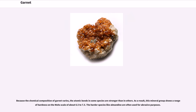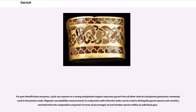Because the chemical composition of garnet varies, the atomic bonds in some species are stronger than in others. As a result, this mineral group shows a range of hardness on the Mohs scale of about 6.5 to 7.5. The harder species like almandine are often used for abrasive purposes. For gem identification, a pickup response to a strong neodymium magnet separates garnet from all other natural transparent gemstones common in the jewelry trade. Magnetic susceptibility measurements in conjunction with refractive index can be used to distinguish garnet species and determine composition in terms of percentages of end-member species.